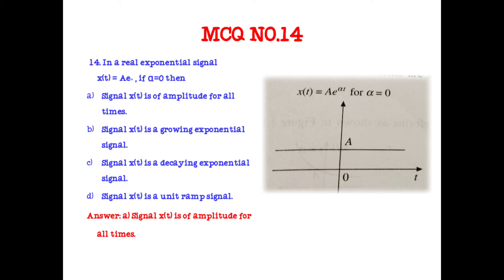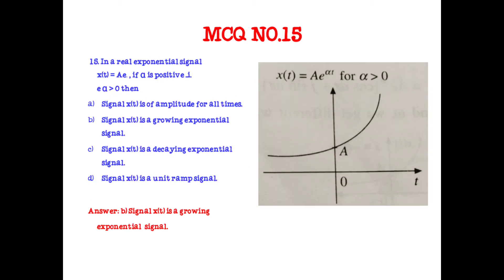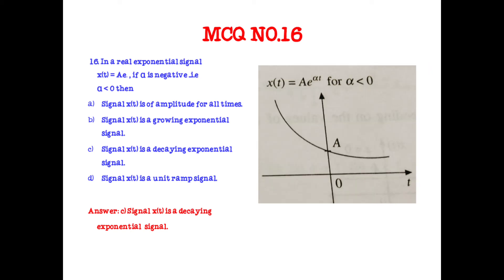For the same real exponential signal A·e^(αt), if α is positive (α > 0), the signal grows exponentially over time. If α takes a negative value, the signal becomes a decaying exponential signal.